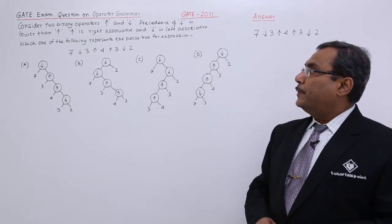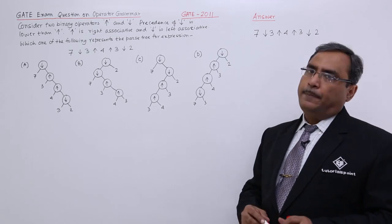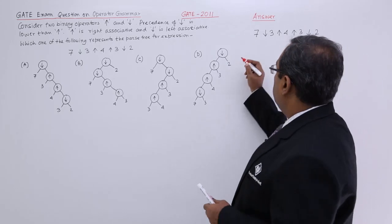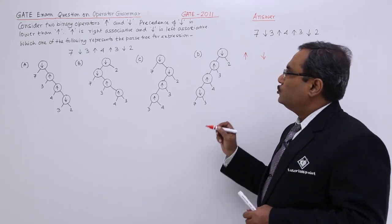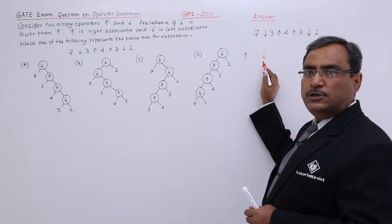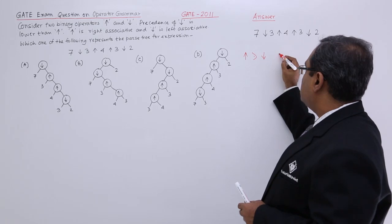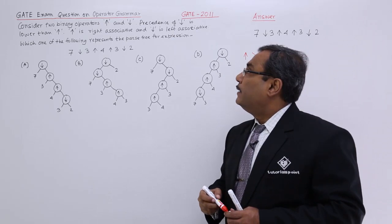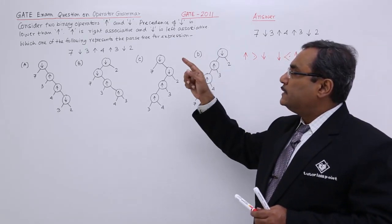Consider two binary operators: up arrow (↑) and down arrow (↓). They are having two operators. The precedence of down arrow is lower than up arrow, so this operator is having precedence lower than this operator. That means it will have a precedence like this — precedence of down arrow is lower than precedence of up arrow.